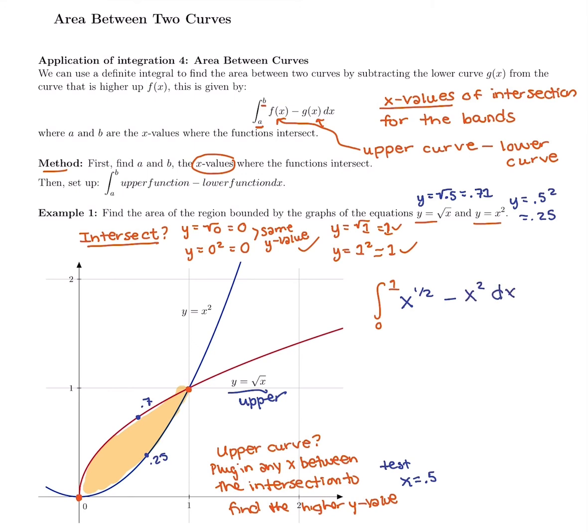Now that I've done the setup, figuring out where they intersect at 0 and 1, they have the same y values. And then the upper function, testing any number between 0 and 1, I figured out that the square root of x is higher than x squared on that interval. Now I'm ready to take a regular integral and plug in.